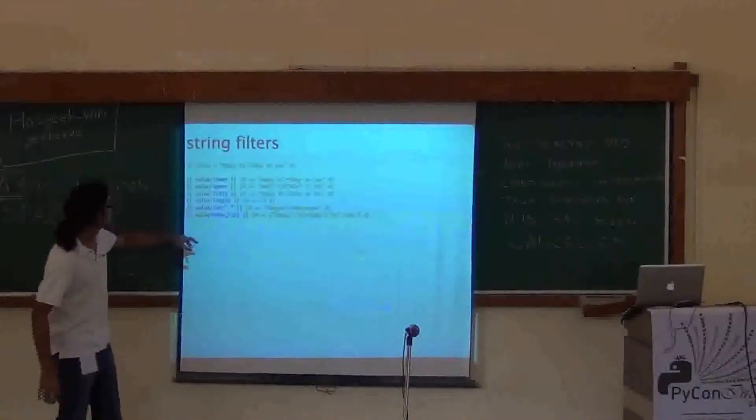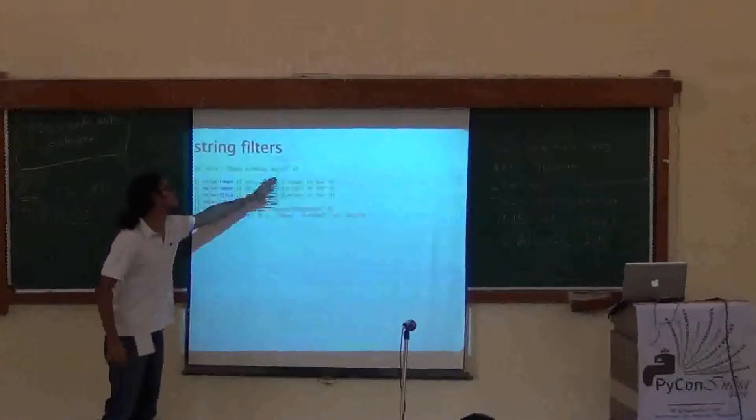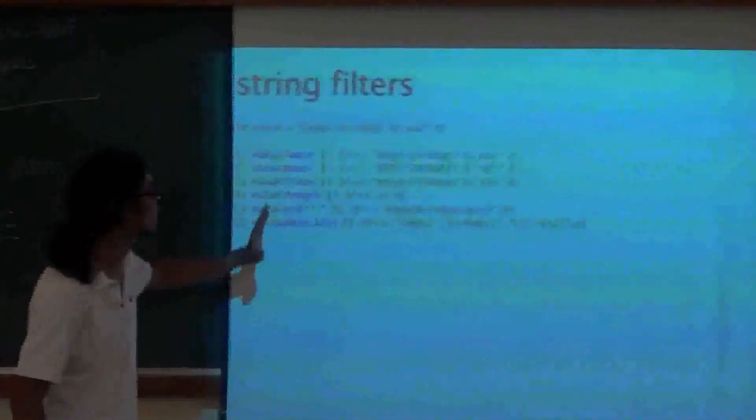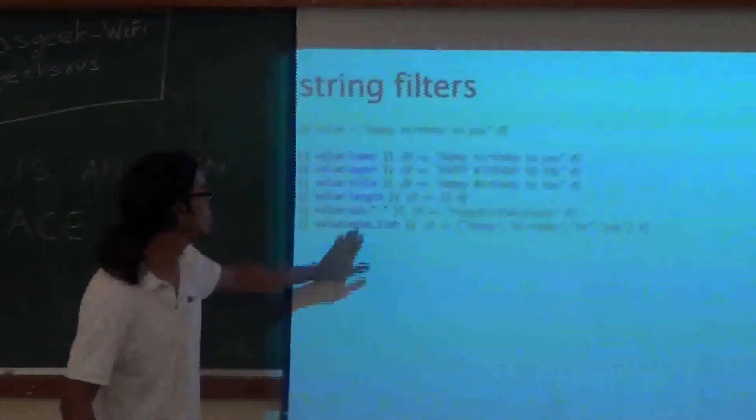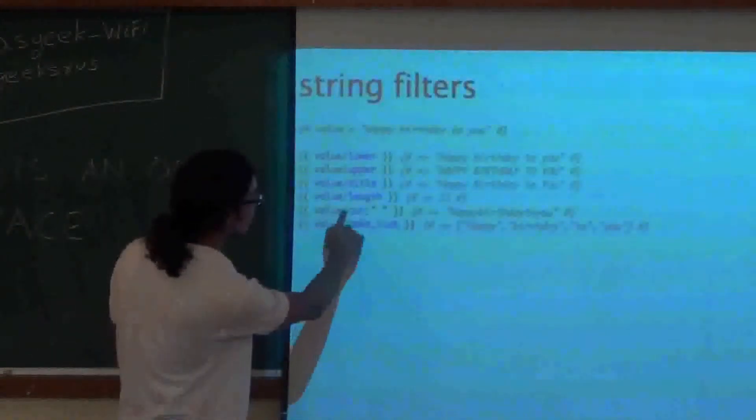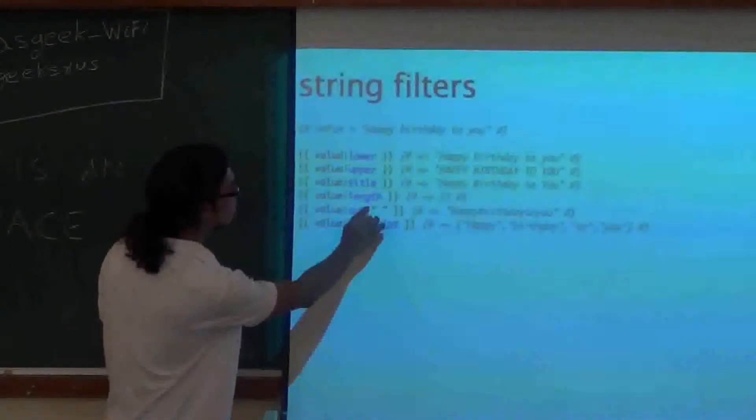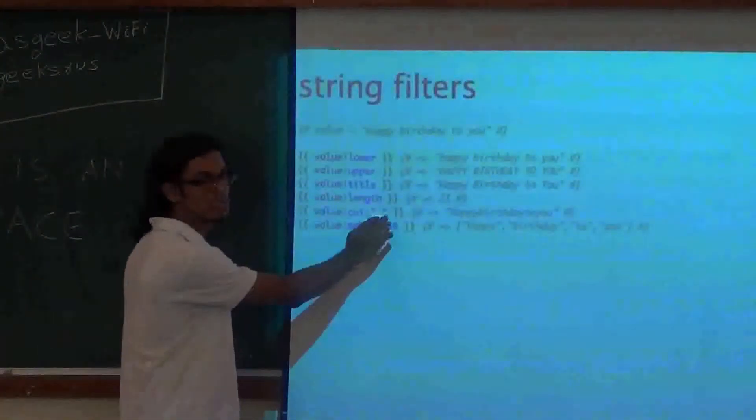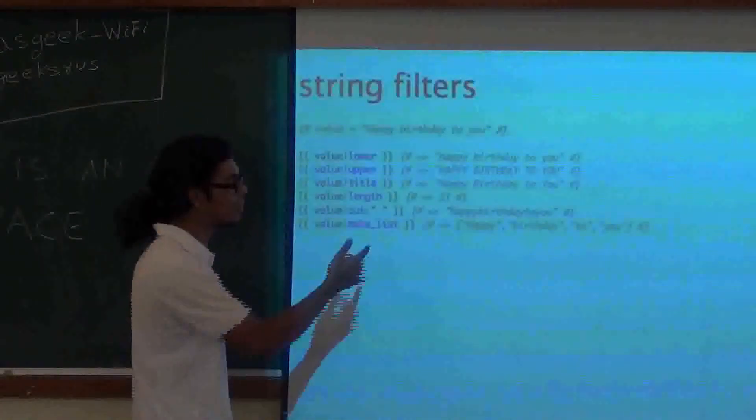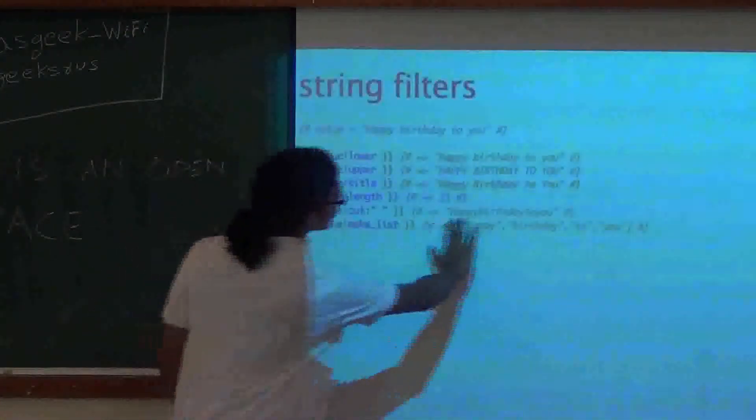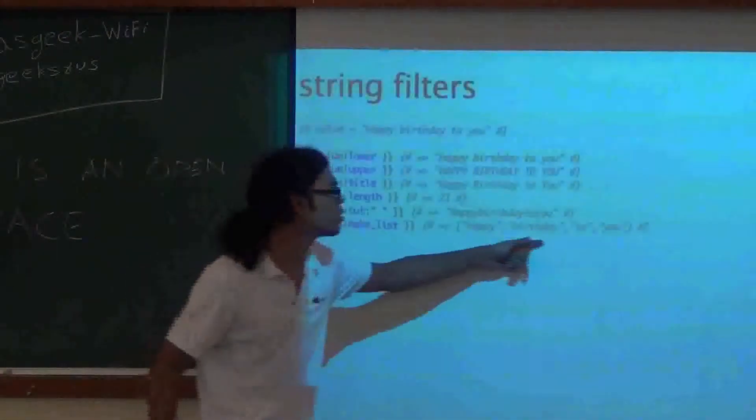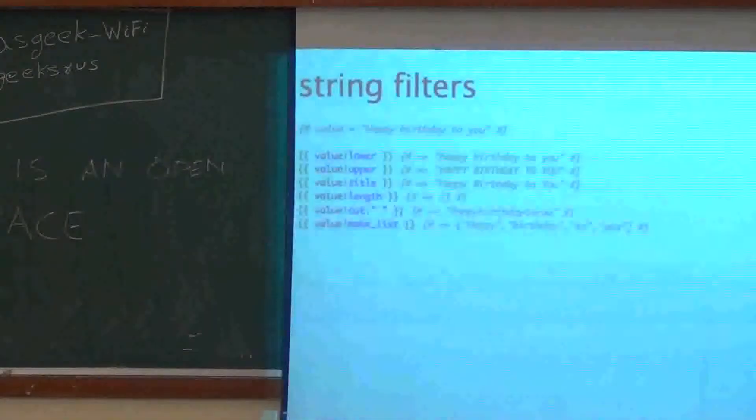So these are string filters. So I have defined value to something. And then you could, these are really helpful. You can change it to lower case, uppercase, title case. You can get the length. You can cut it. So how it takes parameters is after the pipe and the filter name, then you put a colon and then you pass the arguments. So my argument here is the blank space bar, a space. So what it does is, it removes space from the entire sentence.